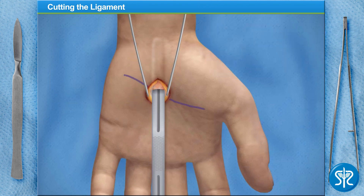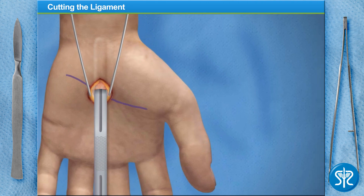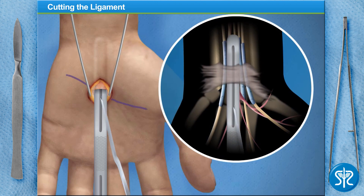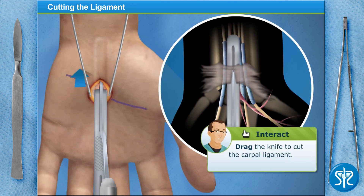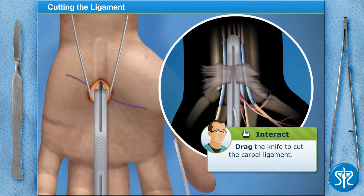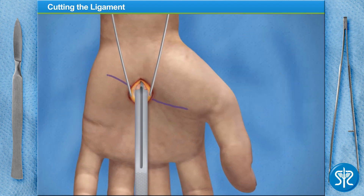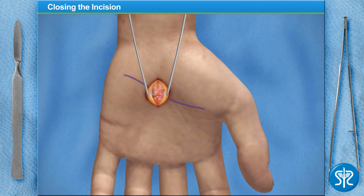Once it's in position, you'll advance our special knife down the guide to split the carpal ligament. As you push the knife forward, you will feel it cutting through the carpal ligament. With the transverse carpal ligament cut, the median nerve is no longer inflamed.